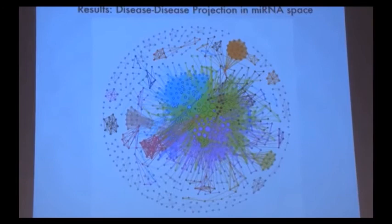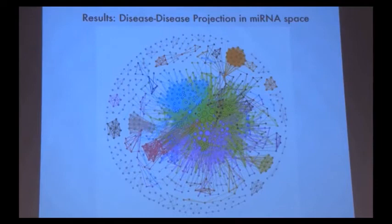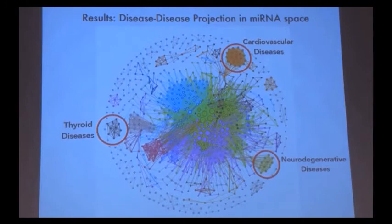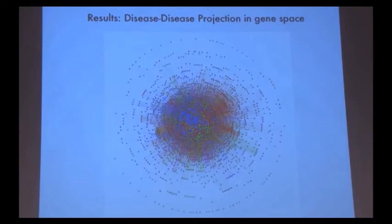Looking at this Gephi image of a disease-disease projection in micro-RNA space, the different colors correspond to modularity classes as determined by a modularity algorithm. There is very distinctive clustering in this network, and each of these modules corresponds to individual diseases — for example, cardiovascular diseases, neurodegenerative diseases, and thyroid diseases.